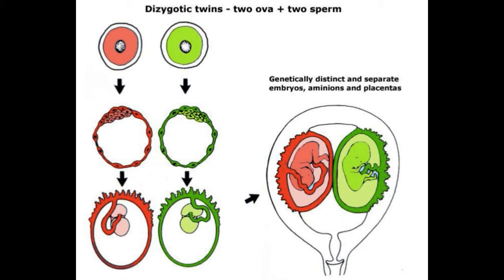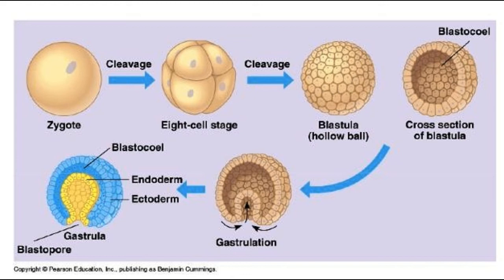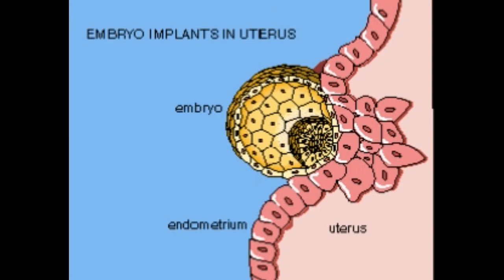Back to our zygote. After about four days, it includes about 100 cells and looks like a hollow ball. Those cells all do different things — the inner part is where the baby will grow. When that zygote implants itself into the uterine wall, it enters another stage: the embryonic stage.